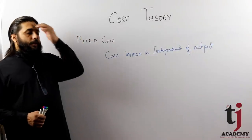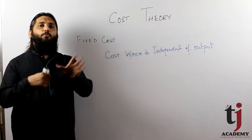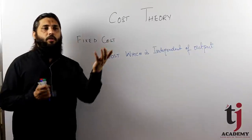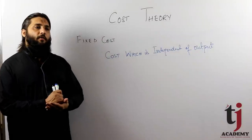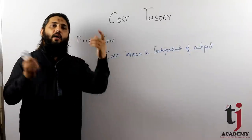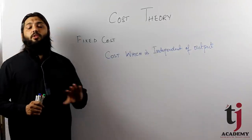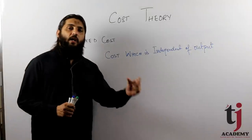The cost which is independent of output. For example, you have an electricity meter - there is a small fixed amount that you have to pay. Telephone, if you have line rent, you have to pay. You have to call or not, all these costs are fixed. Fixed cost which is independent of output. You produce or not, you have to pay.